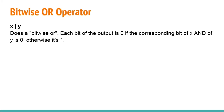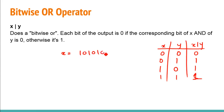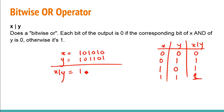Next we have the bitwise OR operator. In the OR truth table, if both inputs are zero the output is zero, but if any one of them is one the output is one. Taking an example with x and y, x OR y comes out to be 101111 — any single one makes the output one.